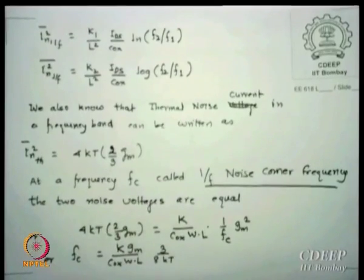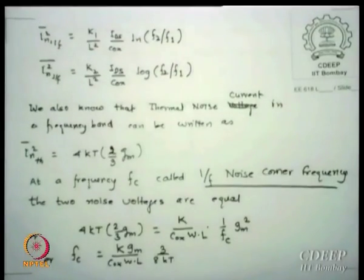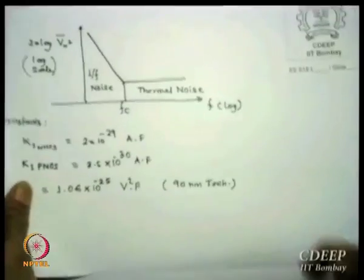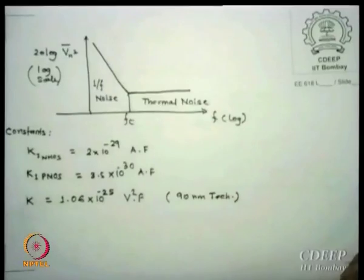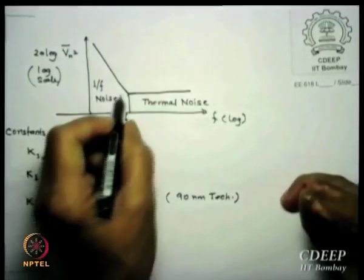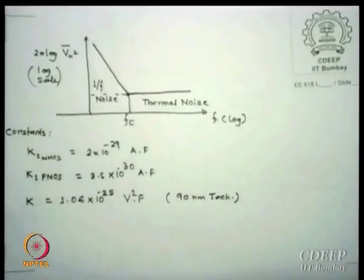We also know there is thermal noise occurring simultaneously. Thermal noise is constant—there is no frequency term here. Somewhere this noise voltage value will become equal to the noise voltage due to 1 upon f noise. 1 upon f noise is decreasing, and thermal noise is constant.